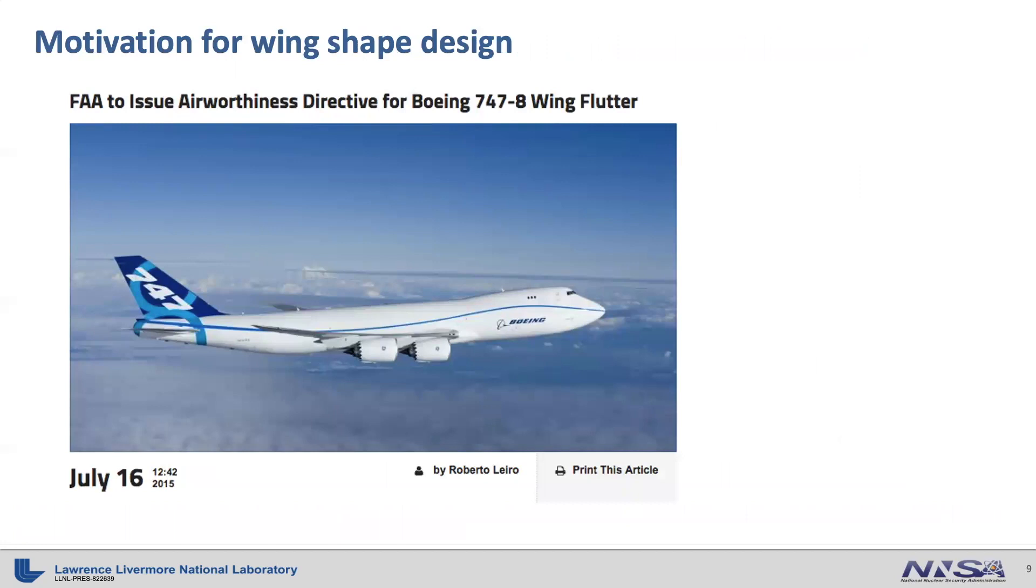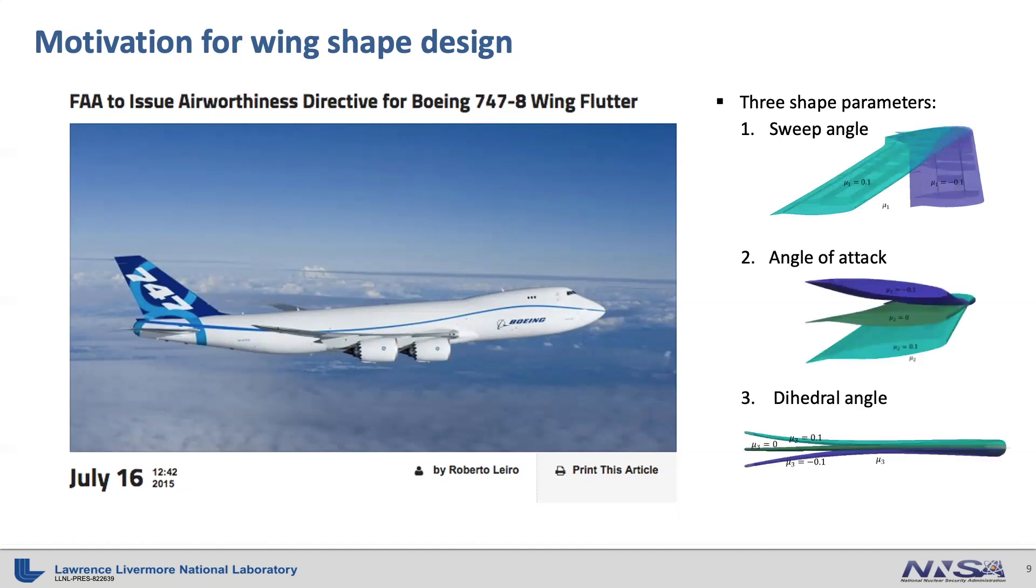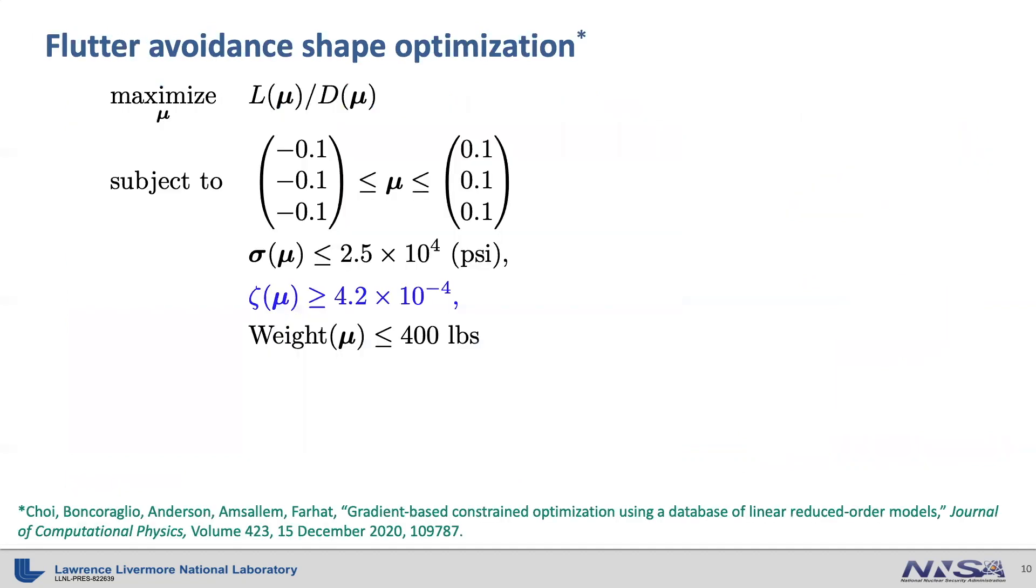We demonstrate the performance of the local reduced order model interpolation on matrix manifold approach in a wing shape design problem with flutter constraints. The wing flutter problem is directly related to safety, so it is very important to design a wing so that flutter does not occur. So we solved a shape optimization problem with three shape parameters: sweep angle, angle of attack, and dihedral angle. We formulate the optimization problem to maximize the lift-drag ratio with bound constraints on the shape parameters along with stress constraints, flutter constraints, and weight constraints. Here we apply the local reduced order model interpolation matrix manifold approach for the flutter constraints.